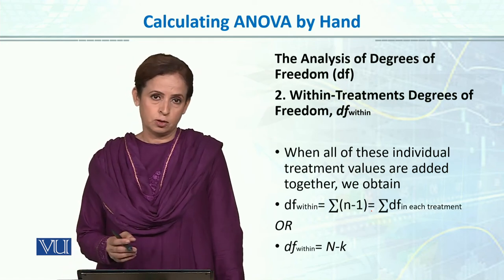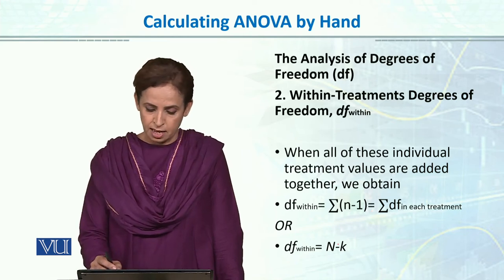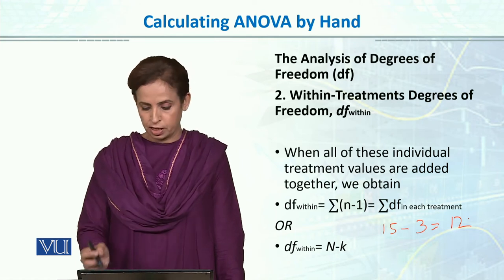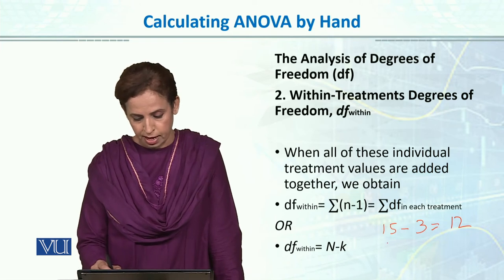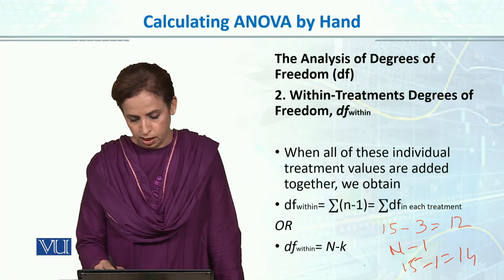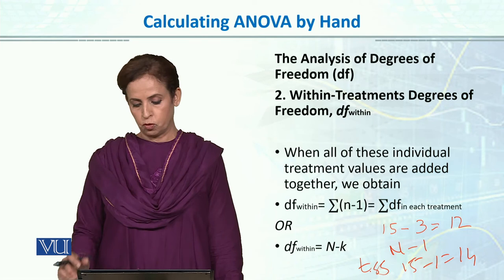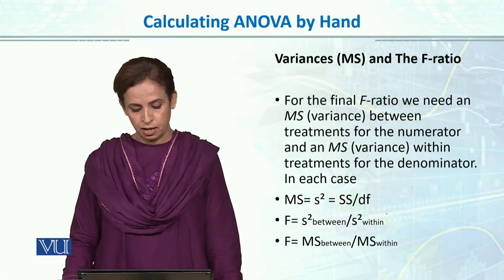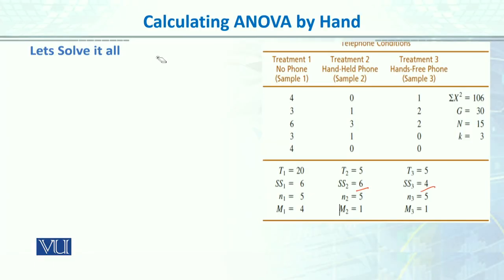Within group degrees of freedom is N minus k. Our total N is 15 and we have 3 groups, so within group degrees of freedom equals 12. Total degrees of freedom is N minus 1 equals 14. For within sum of squares, we already calculated each group's SS: 6, 6, and 4. Simply add them: 6 plus 6 plus 4 equals 16.